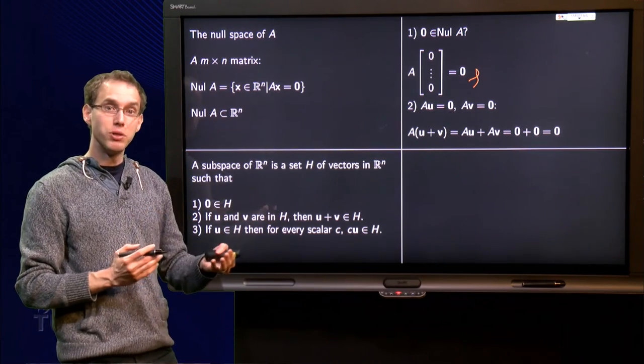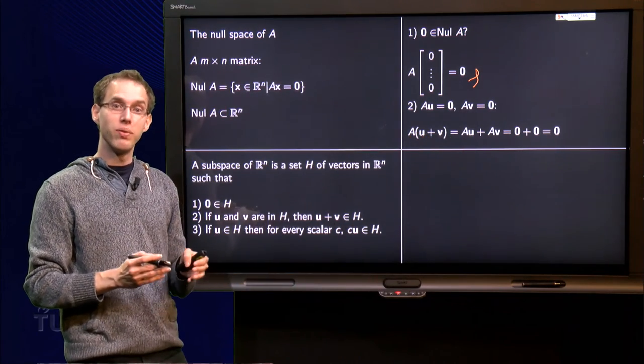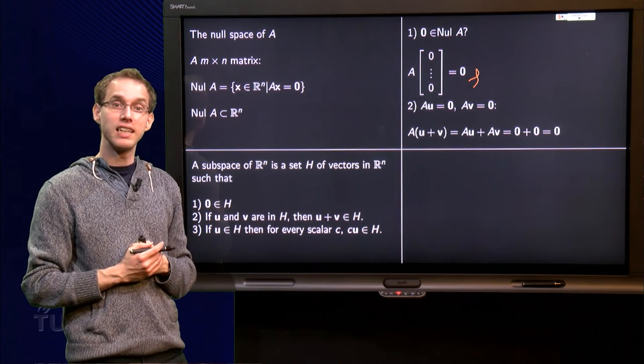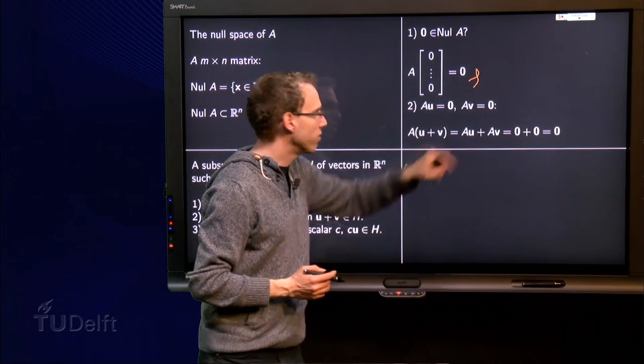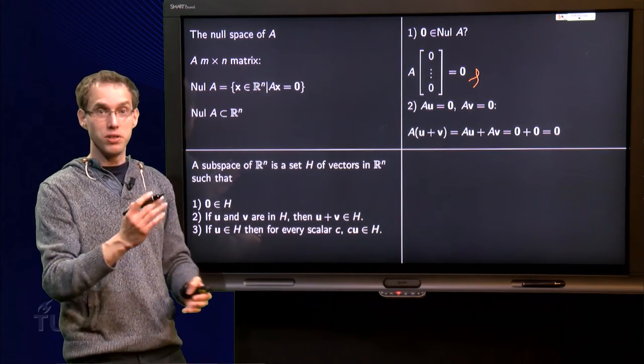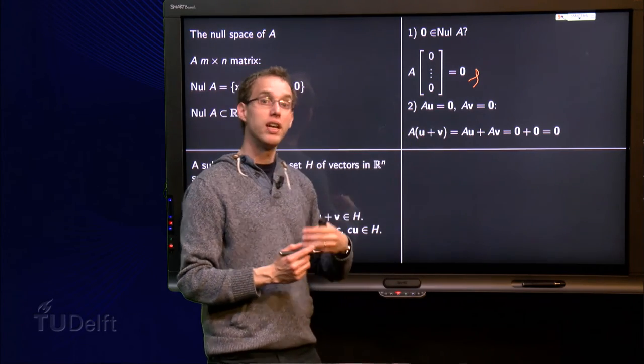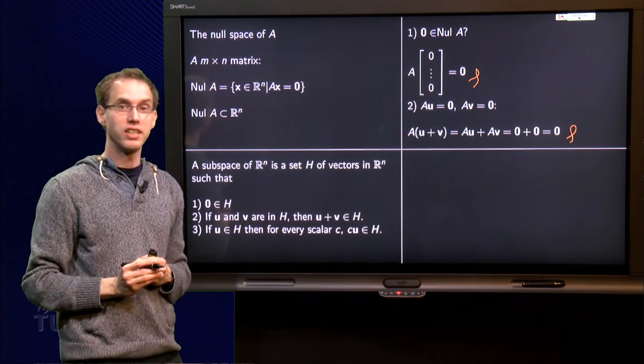Well A times u plus v equals A times u plus A times v, because we are doing linear algebra, so we can work out the brackets like this, and then we know A times u equals zero and A times v equals zero, so we get zero plus zero equals the zero vector, and indeed A times u plus v is also the zero vector. So the second property is also satisfied.